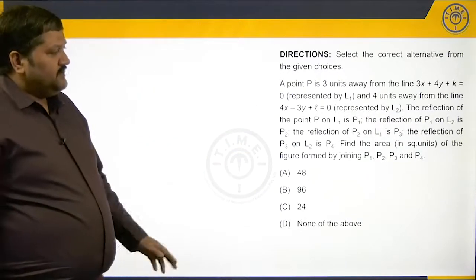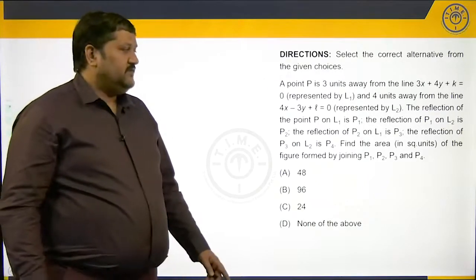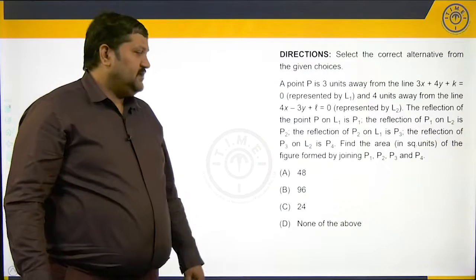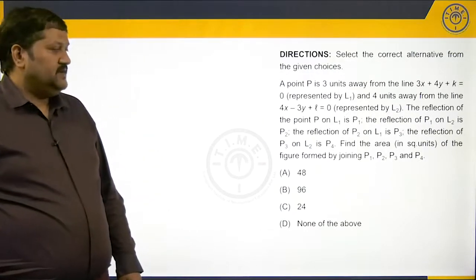The reflection of point P on L1 is P1, the reflection of P1 on L2 is P2, the reflection of P2 on L1 is P3, and the reflection of P3 on L2 is P4. So find the area of the figure formed by joining P1, P2, P3, and P4.